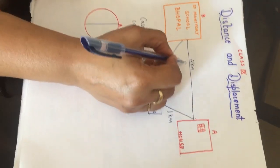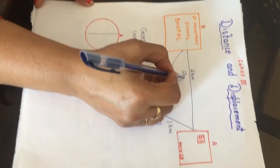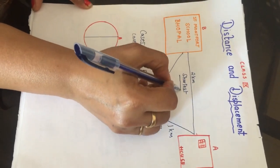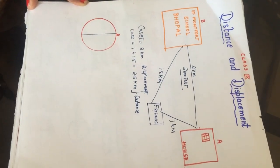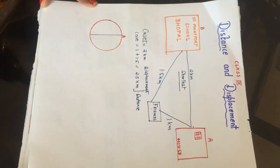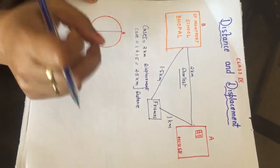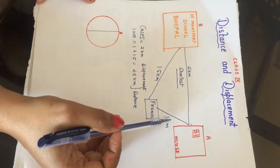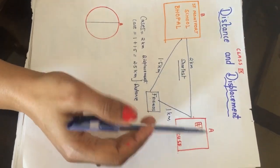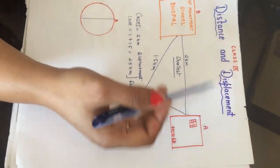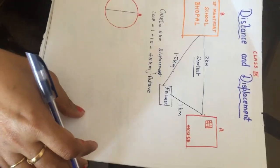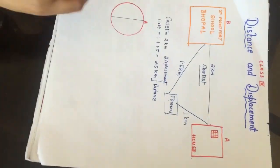Displacement is the shortest distance between any two given points, and distance is just the length of the path — it could be anything. You can move to any other place and then come to the school, so distance can be anything.